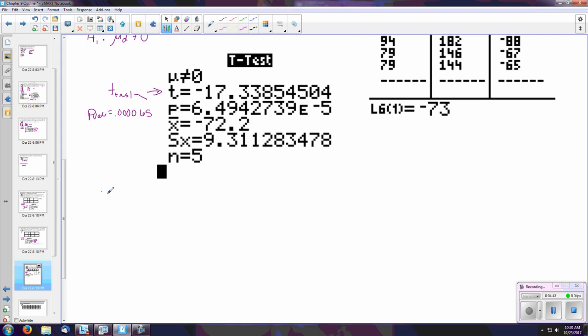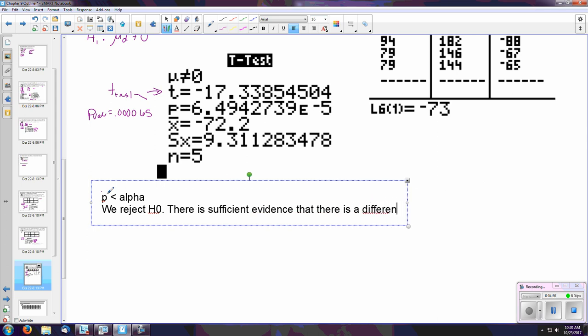So we can say that since p is smaller than alpha, we reject our null hypothesis. There is sufficient evidence that there is a difference in the blood pressure measurements in each arm.